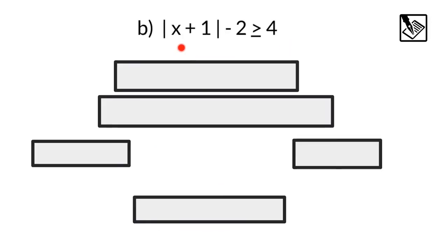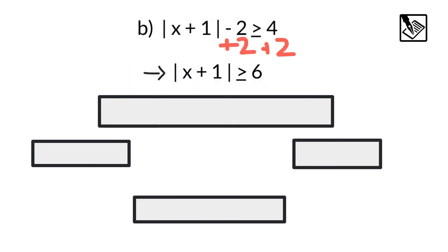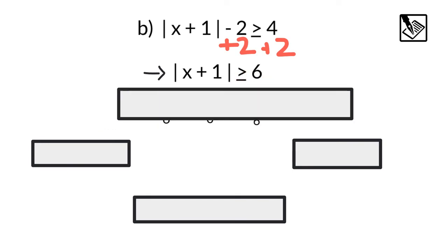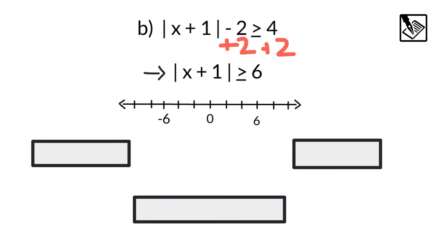Example B: absolute value of x plus 1 minus 2 is greater than or equal to 4. First, let's isolate that absolute value. I'm going to add 2 to both sides of my inequality, which cancels the 2 out to get the absolute value by itself: the absolute value of x plus 1 is greater than or equal to 6 spaces away from 0. If I want to visualize on my number line, I know I'm going to be more than 6 spaces away.